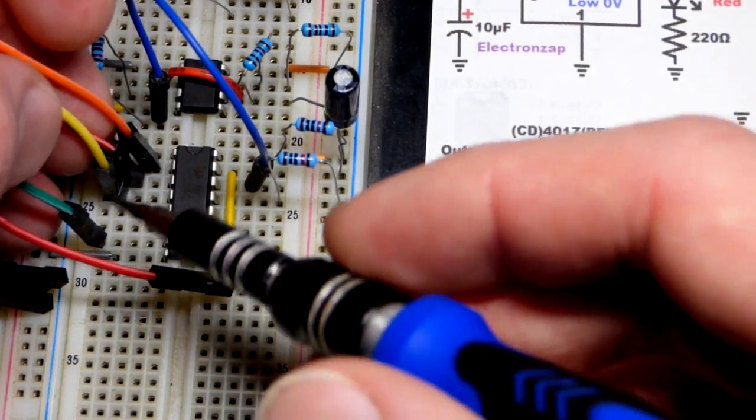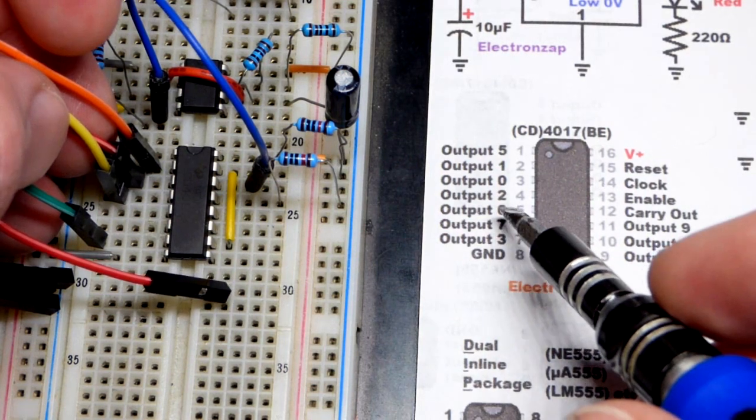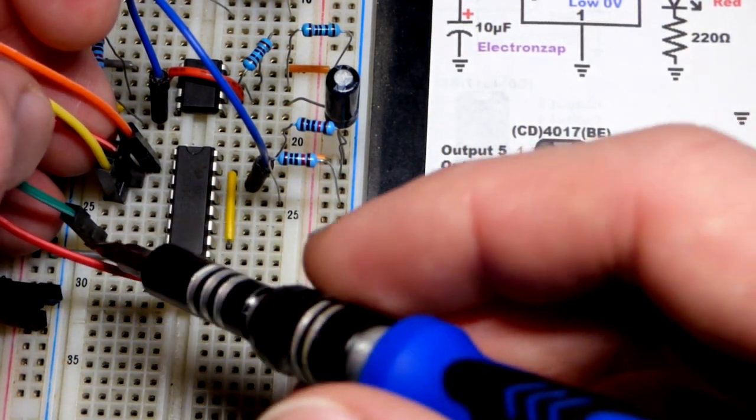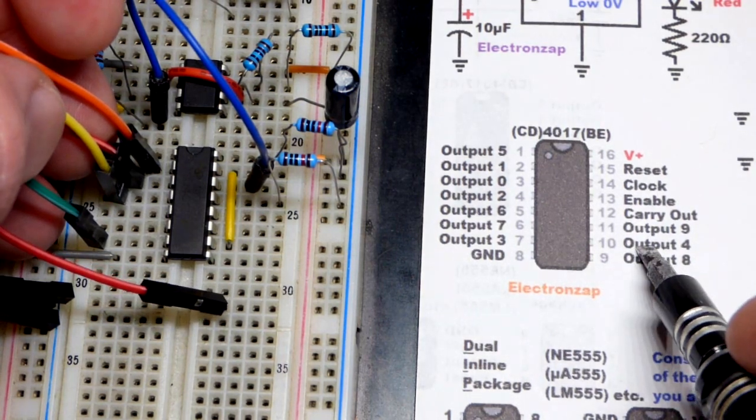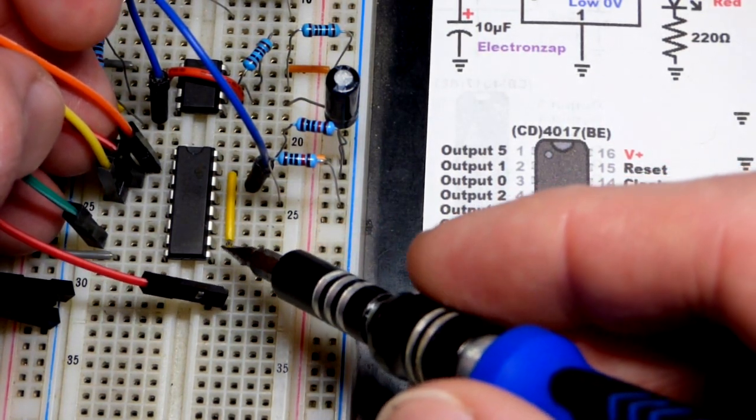And then another pulse, we got output 2, the yellow jumper there. And then another pulse, output 3 there. Then when we give it another pulse, output 4 goes high, but we're not really doing anything with that.